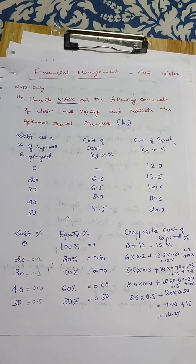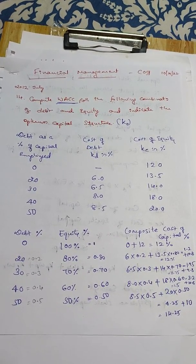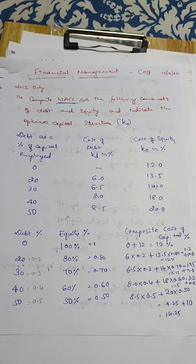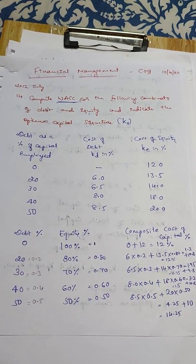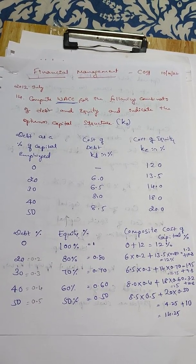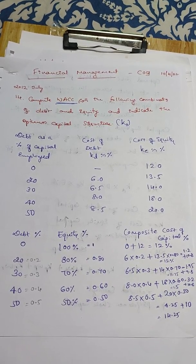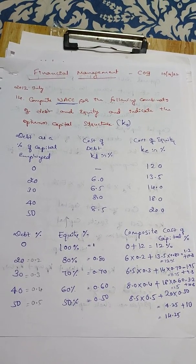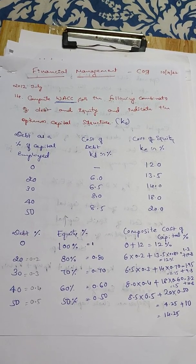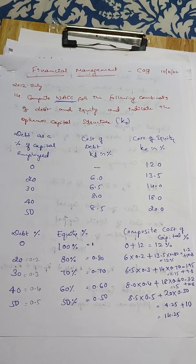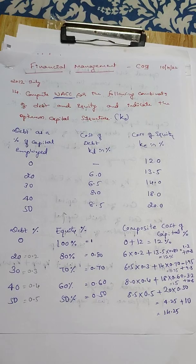The table gives debt as a percentage of capital employed: 0, 20, 30, 40, 50. Cost of debt KD in percentage: 6, 6.5, 8, 8.5. Cost of equity KE in percentage: 12, 13.5, 14, 18, and 20.